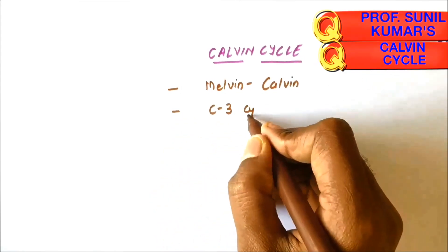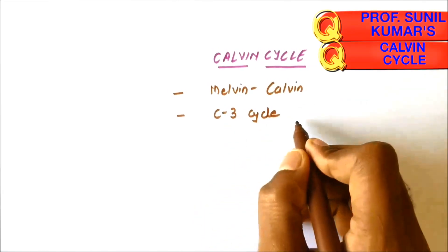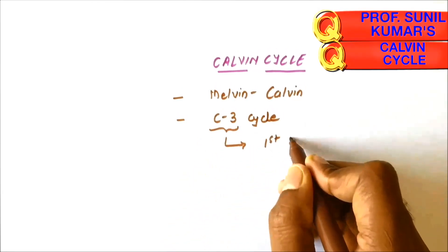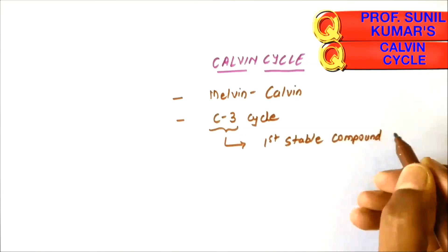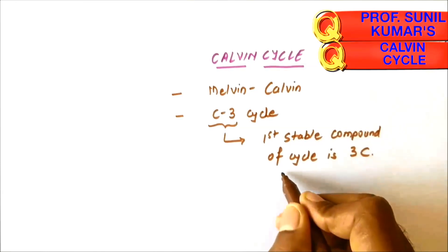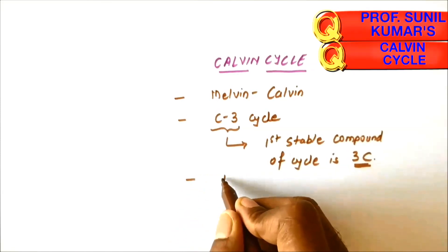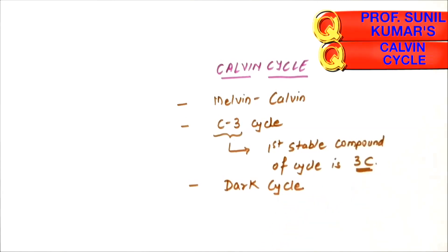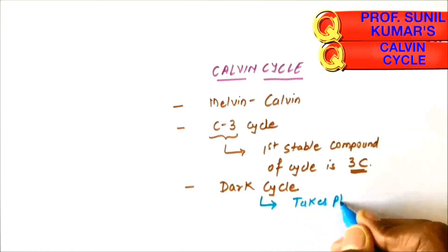The Calvin Cycle is also called the C3 cycle. Students often get confused between C3 and the carbon cycle — remember they are different. It is called the C3 cycle because the first stable compound of the cycle is a three-carbon compound. The Calvin Cycle is also called the dark cycle.